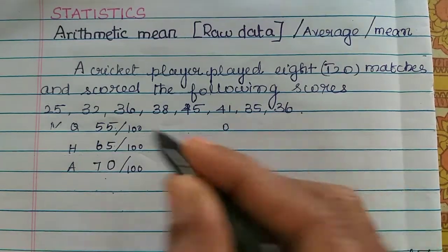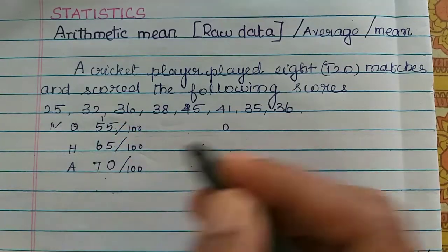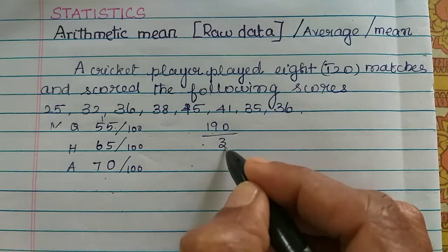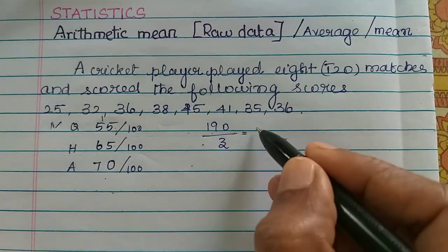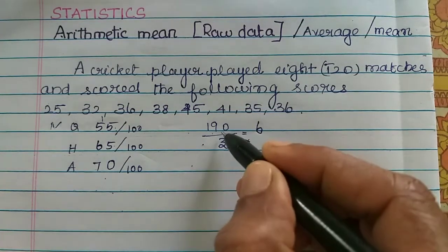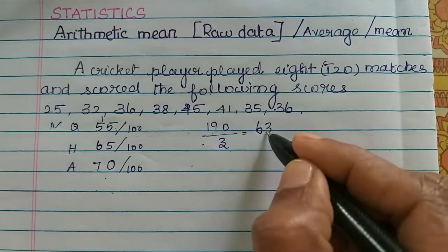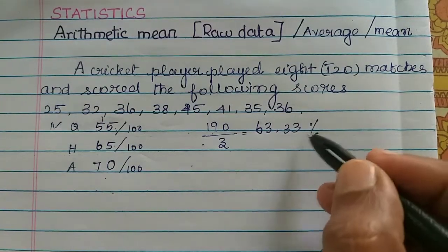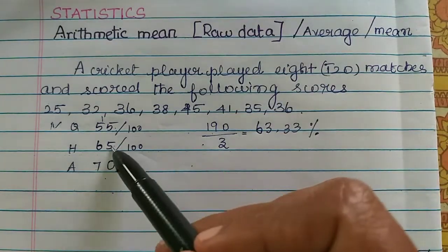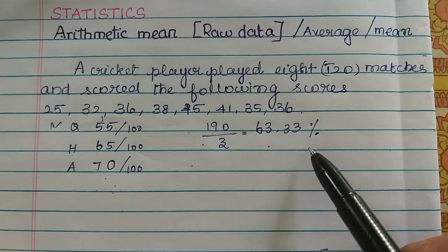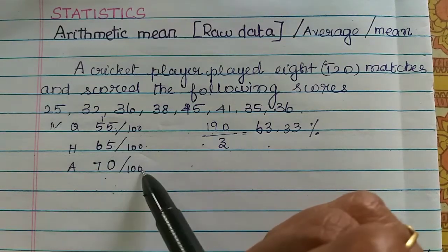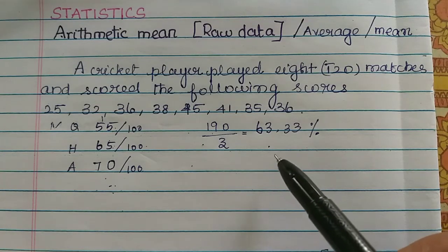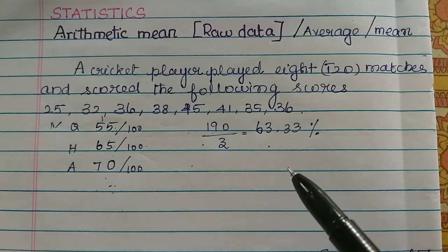We add the three marks and divide by 3. So we add 55, 65, 70 — the total is 190, divided by 3. The average comes out to approximately 63%. So the average is around 63%.